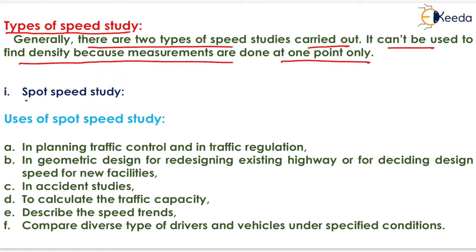The first one is spot speed study. The use of spot speed study is first in planning traffic control and in traffic regulation. The next one is in geometric design for redesigning existing highway or for deciding design speed for new facilities.